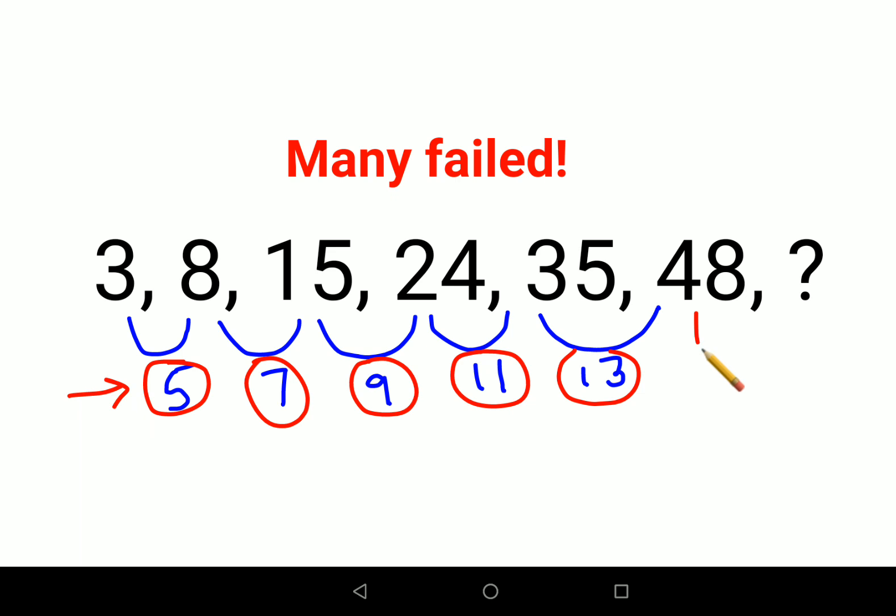next number? The next number would be 15. After 13, the next odd number is 15. And when you add 48 to 15, the answer comes out to be 63. I hope you've understood